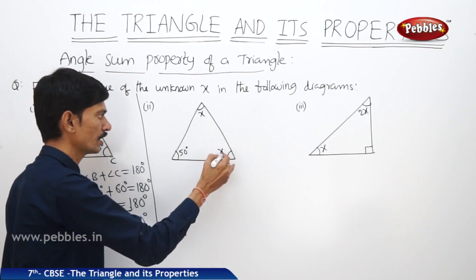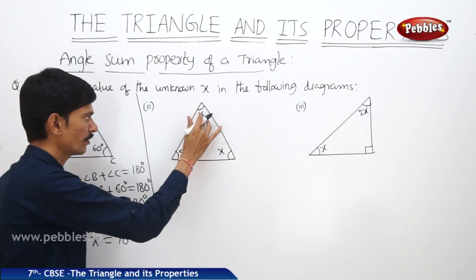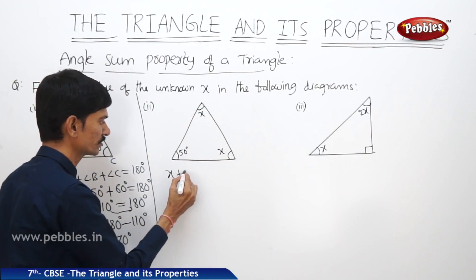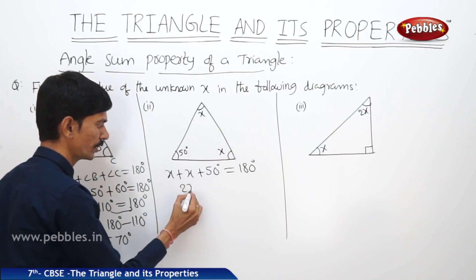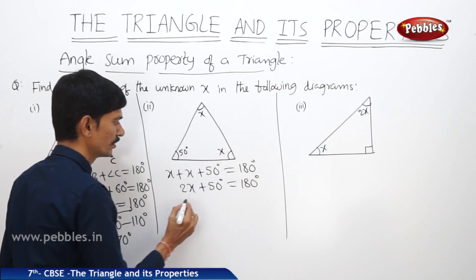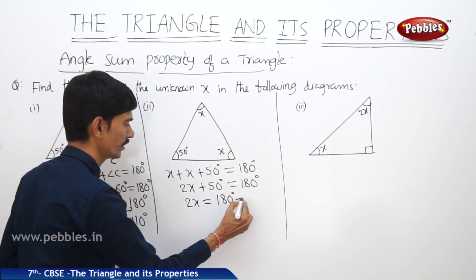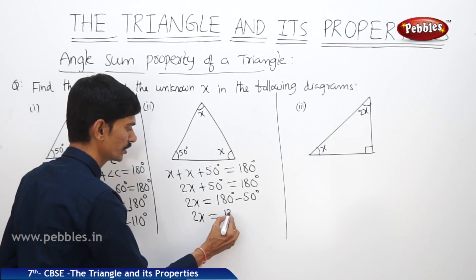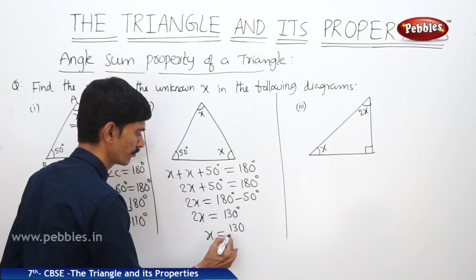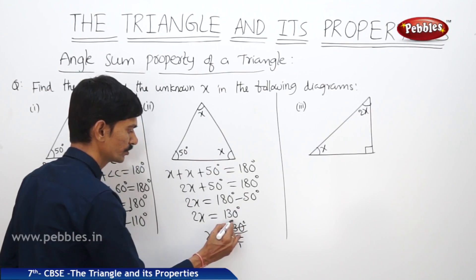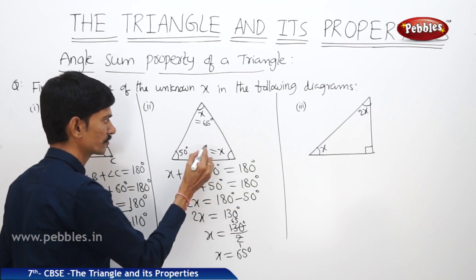In the second figure, two angles are represented by X and the third angle is represented by 50 degrees. According to the angle sum property of a triangle, sum of the three angles equals 180 degrees, so we write X plus X plus 50 degrees equals 180 degrees. X plus X becomes 2X plus 50 degrees equals 180 degrees. By transposing 50 degrees to the RHS, we get 2X equals 130 degrees. Then X equals 130 degrees divided by 2, so X equals 65 degrees. Both unknown angles are 65 degrees.